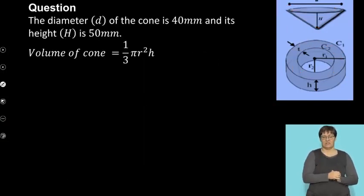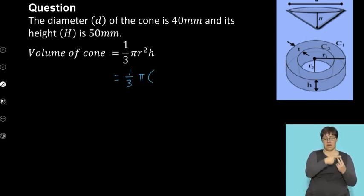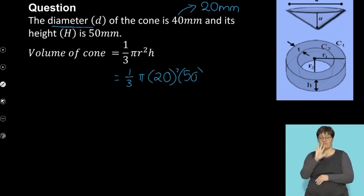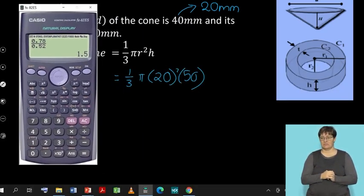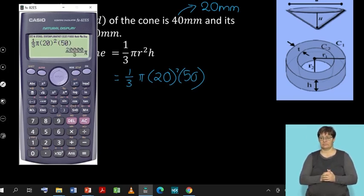First, calculate the volume of the cone: one-third × π × r² × h. The diameter is 40 mm, so the radius is 20 mm. Substituting: one-third × π × 20² × 50. Calculating gives 20,000/3 × π, which is the volume of the cone.